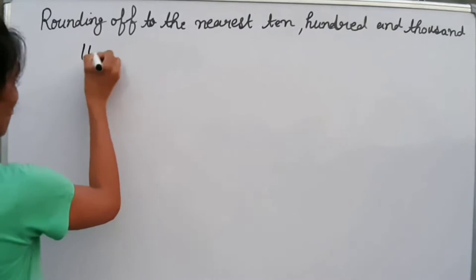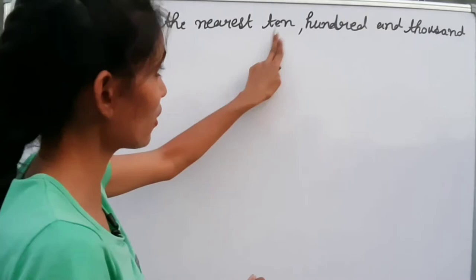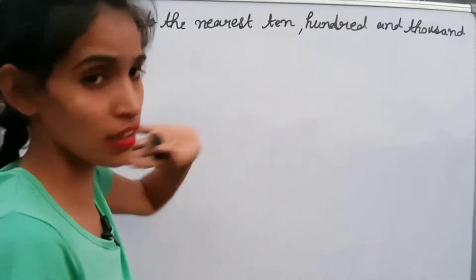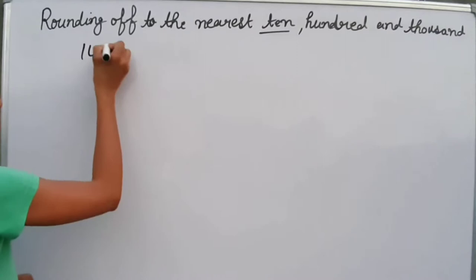Suppose we take the number 147. First, let's look at the rule for rounding to the nearest ten. To round to the nearest 10, we have to look at the last digit — the ones place value.